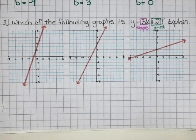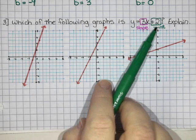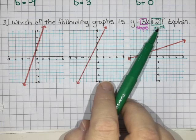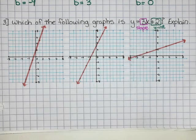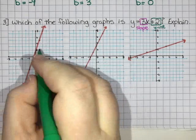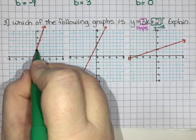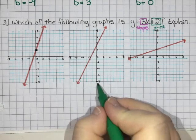When I'm trying to pick a graph, the easiest place to start is probably with the y-intercept. I want to look for a graph that crosses the y-axis at 2. If I look at this one, it crosses the y-axis at 2.